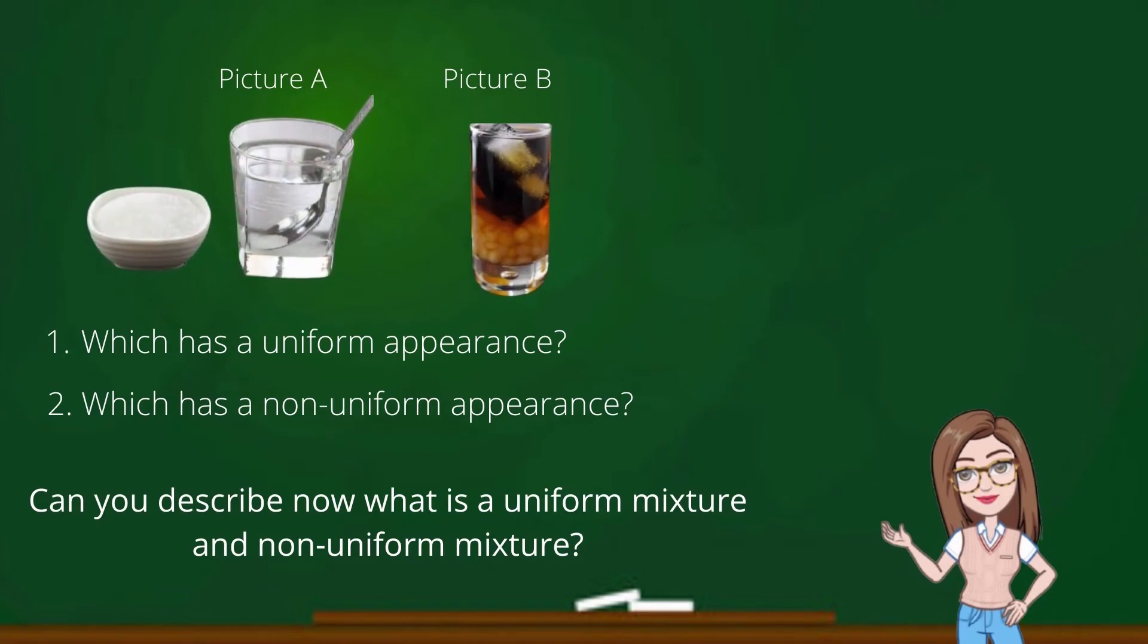Let us study the two pictures. Picture A is a mixture of sugar and water. Picture B is a mixture of sago and gulaman, which has a uniform appearance. Correct! Picture A, which is sugar and water, has a uniform appearance.